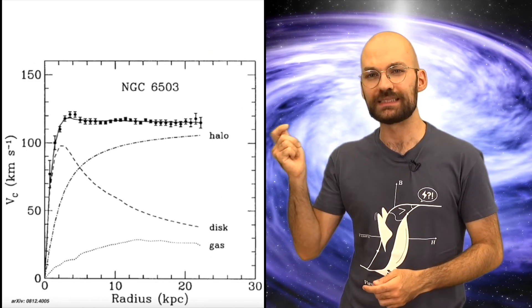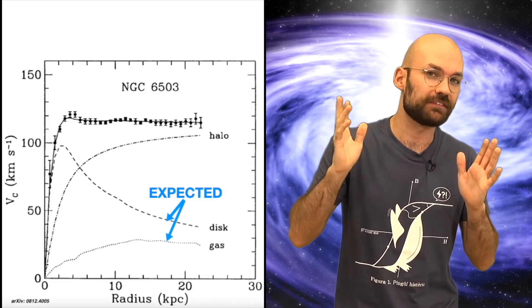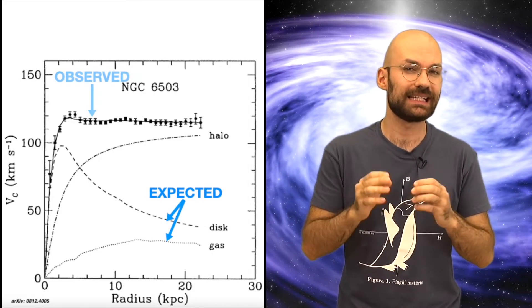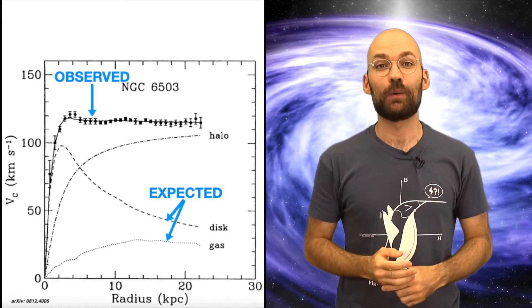In particular, for the galaxy we have seen before, we have the following rotation curve. We see that the rotation velocity this galaxy would have because of the disk or the gas mass is much less than the one it actually has.